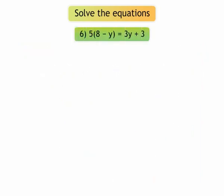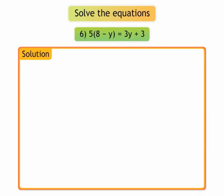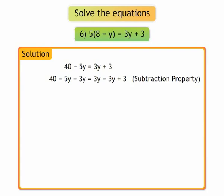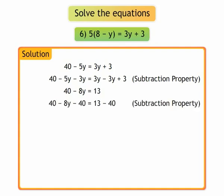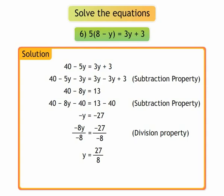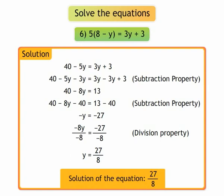6. 5 into bracket 8 minus y is equal to 3y plus 3. On opening the bracket, we get 40 minus 5y is equal to 3y plus 3. By using subtraction property, we get 40 minus 5y minus 3y is equal to 3y minus 3y plus 3. We get 40 minus 8y is equal to 3. By using the subtraction property, we get 40 minus 8y minus 40 is equal to 3 minus 40. Therefore, minus 8y is equal to minus 27. By using division property, we get minus 8y upon minus 8 is equal to minus 27 upon minus 8. Therefore, we get y is equal to 27 upon 8. The solution to the equation is 27 upon 8.